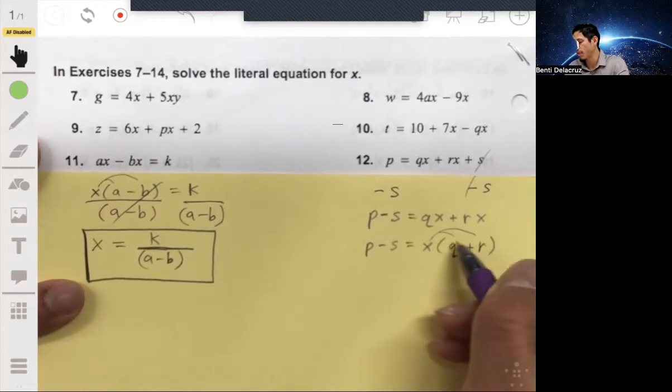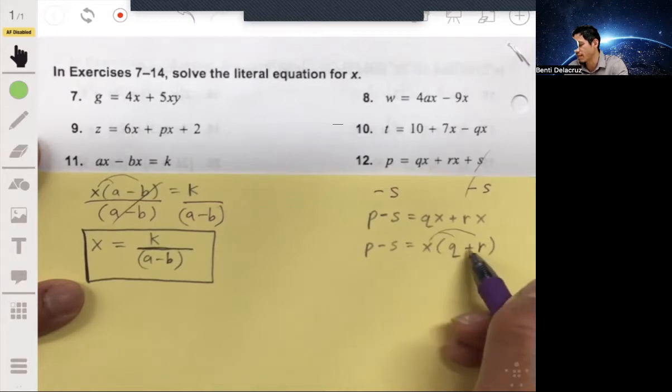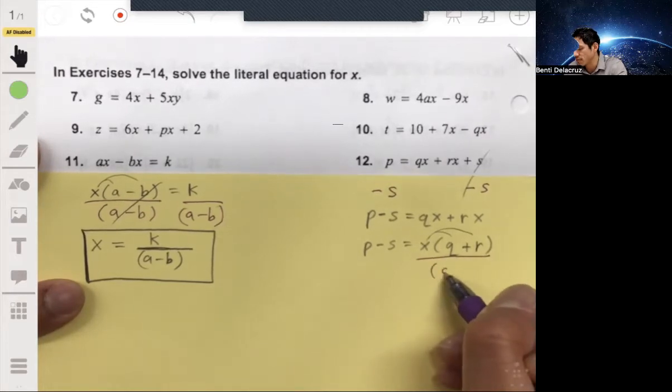Now, we just have to undo multiplying by this group. So, again, think of the Q plus R as two numbers being added. Think of them as like, think of these two things adding up to 10. So it's like X times 10. So if you want to undo that 10, you would just divide by it.